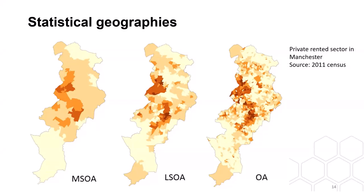The Mid-Layer Super Output Area (MSOA) covers 2,000 to 6,000 households and 5,000 to 15,000 people — quite akin to wards. Published statistics at this level include education attainment and, during the pandemic, weekly COVID test results were mapped at MSOA level. To illustrate the differences: a map of the private rented sector in Manchester shows at MSOA level a broad picture, but at LSOA geography you get more detailed breakdown, and at output area geography it becomes very specific, showing clustering of high private renting around the city centre and the student corridor.